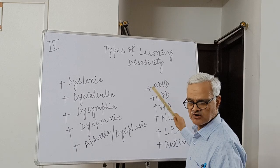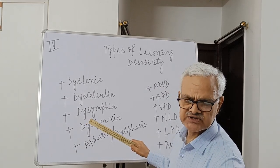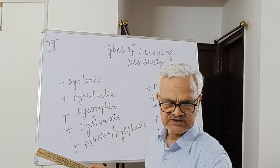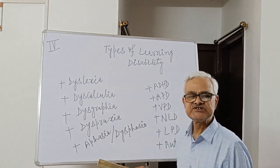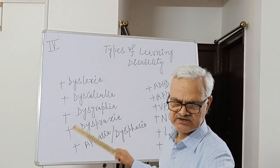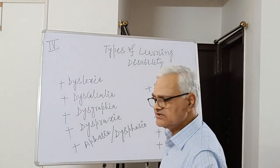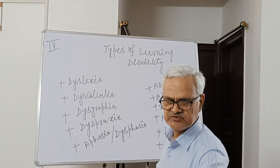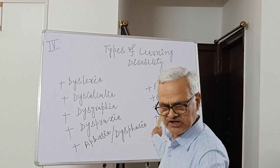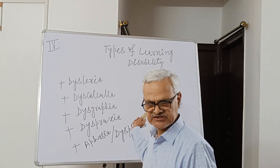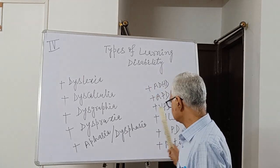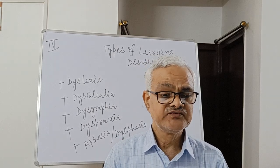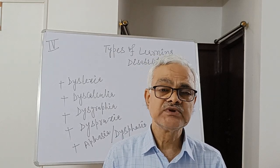To summarize, ADHD stands for Attention Deficit Hyper-Activity Disability. APD is Auditory Processing Disorder, followed by Visual Processing Disorder, Non-Verbal Learning Disorder, and Language Processing Disorder. At the end, there is Autism. So these are the main types of learning disabilities.